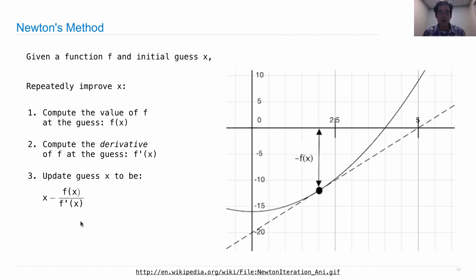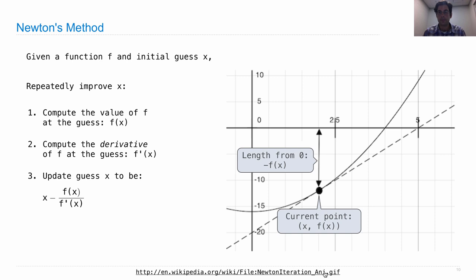So what's going on with this update? Well, we're at this current point, at this x and this f of x. There's this length here that is our distance from 0, negative f of x. And the slope of this tangent line is f prime of x, the derivative of f at x.